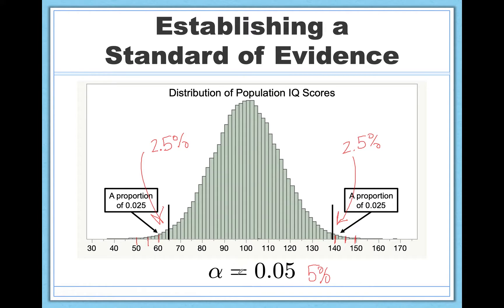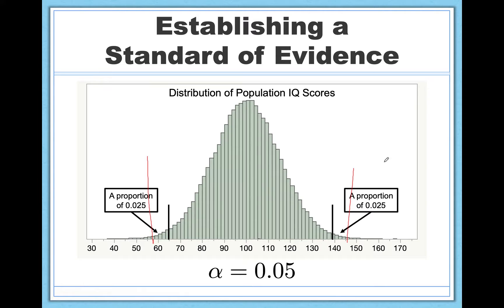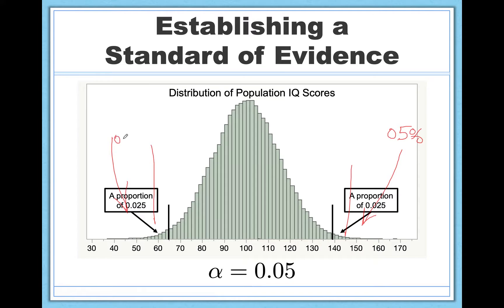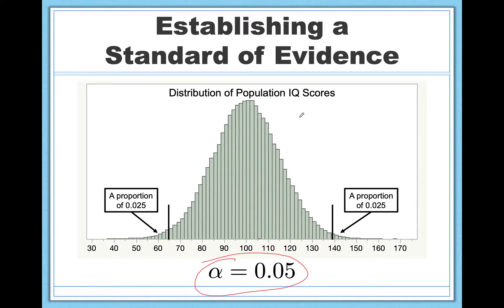Notice we could change this — we could set an alpha level of 0.01 as our standard of evidence. That would make the tails more extreme, looking at only the 1% most extreme outcomes: 0.5% on one side and 0.5% on the other. That would be more strict — we would need to find a more extreme result — but it's under our control. Typically, though, we're just going to stick with an alpha level of 0.05.